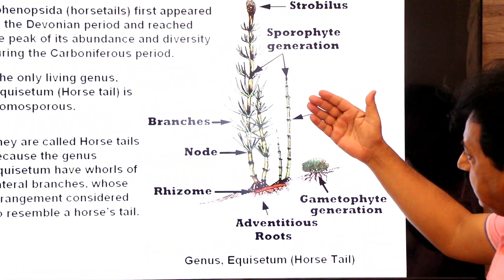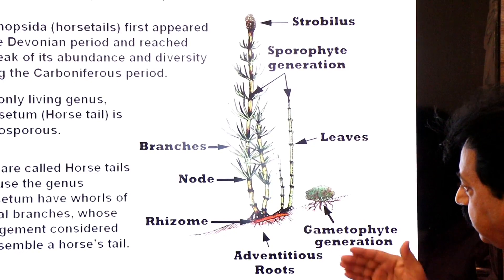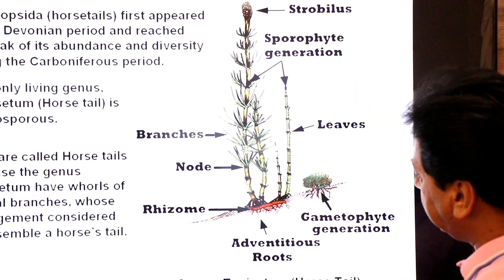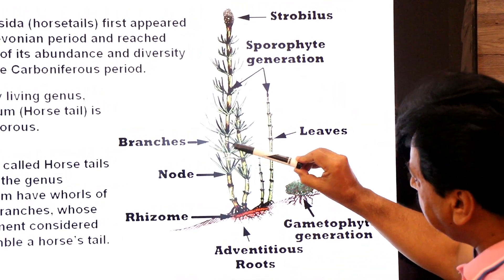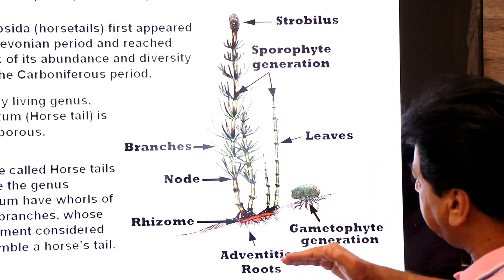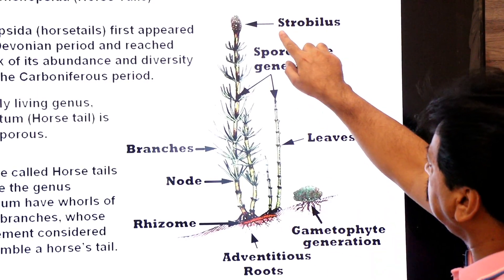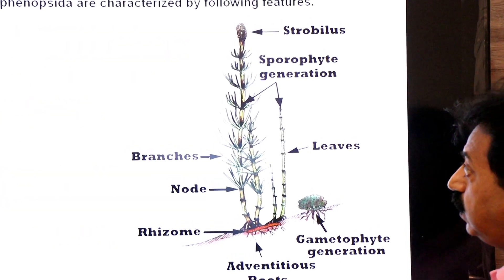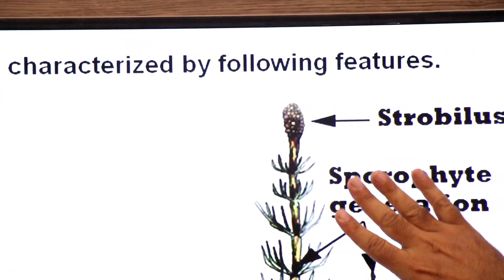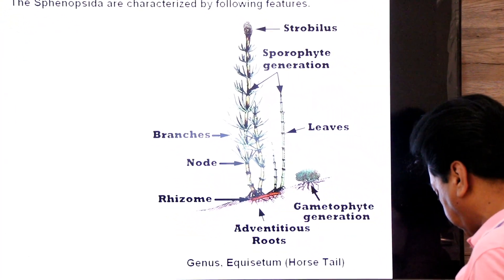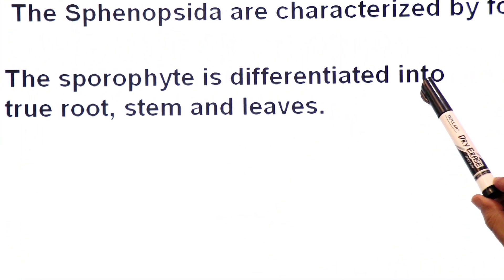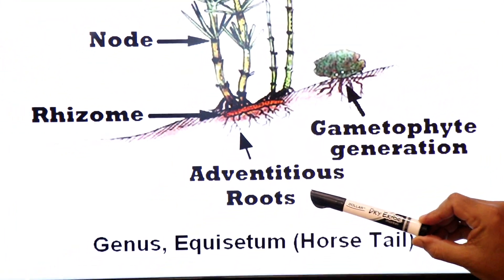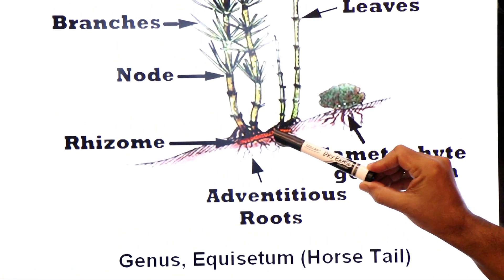What you see here is the sporophyte. In this class, the dominant generation is the sporophyte. The sporophyte is differentiated into true roots, stem, and leaves. The reproductive organs that produce spores are called strobili, also known as cones. Their roots are called adventitious roots — roots that arise from the rhizome. The rhizome is an underground modified stem, and roots arising from the stem are called adventitious roots.